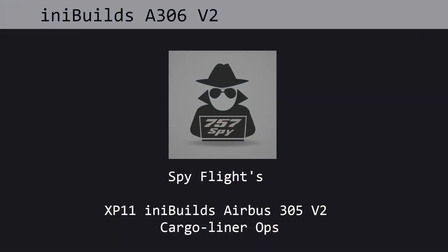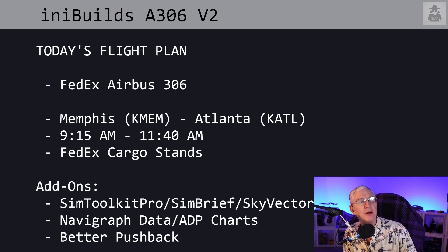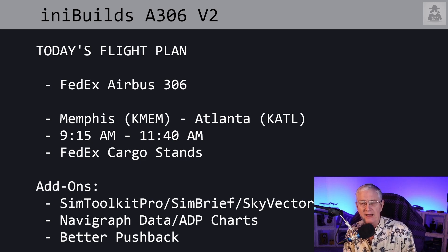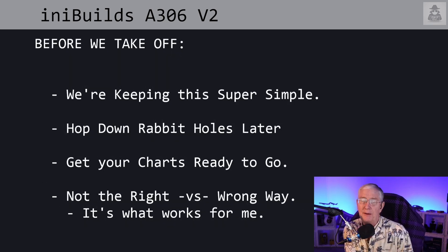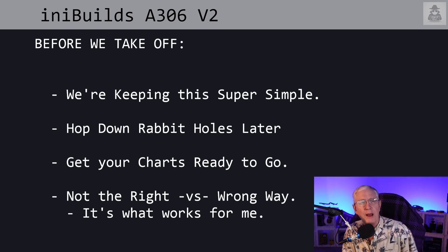As usual with these cold and dark videos, let me show you just a few things about what's going on. We're in the FedEx Airbus A306, going Memphis to Atlanta. The departure time scheduled is 9:15 a.m. We are on the FedEx cargo stands. The add-ons I use are SimToolkit Pro, SimBrief, SkyVector, Navigraph data, ADP charts, and FreeWire Better Pushback. The goal is to get somebody relatively new to this airplane able to start, taxi, take off, fly, land, and get to the gate. We can jump down all the rabbit holes later.